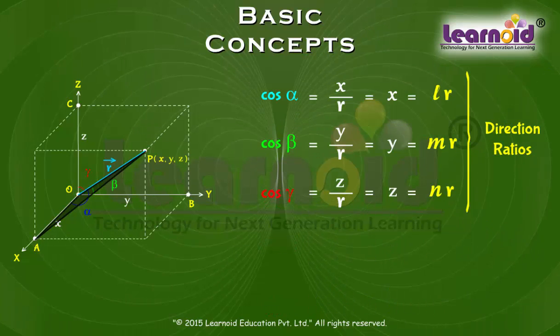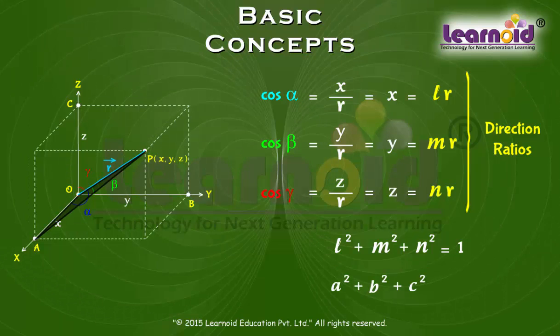We can easily verify that L square plus M square plus N square is equal to 1 but A square plus B square plus C square is not equal to 1.